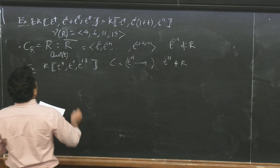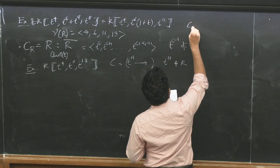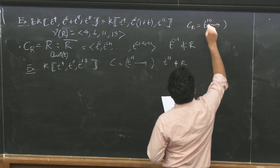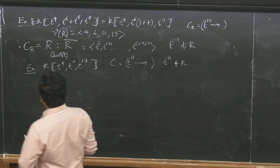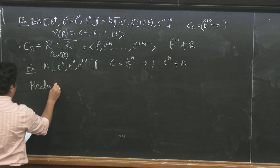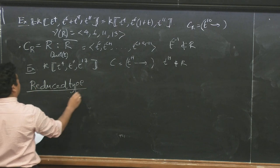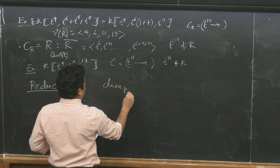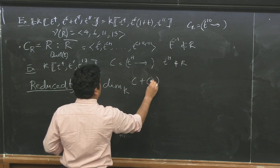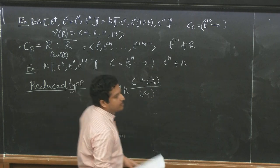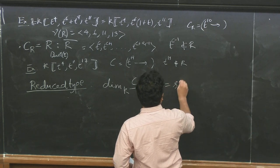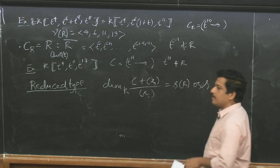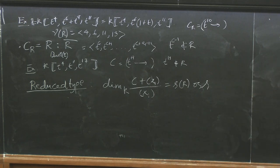For that example, the conductor value is c = 10. The reduced type is the K-dimension of (C + x1R) / x1R, where C is the conductor. I'll call this s(R) or s throughout the talk.